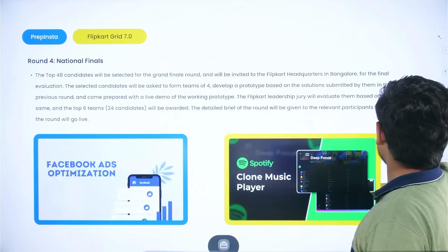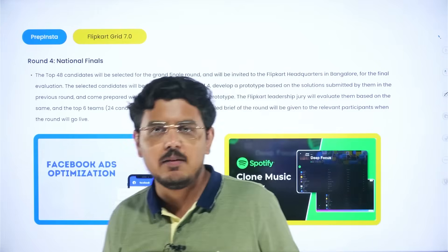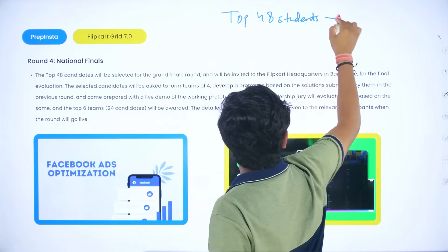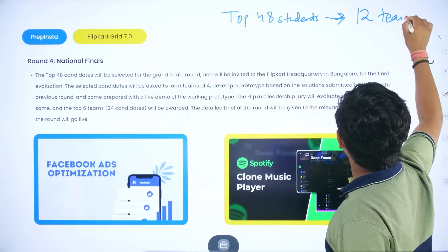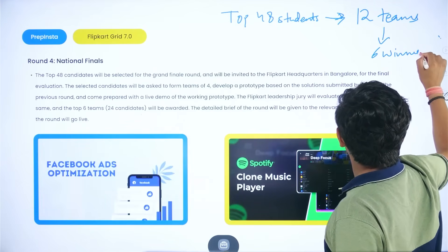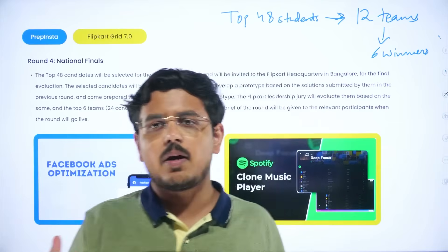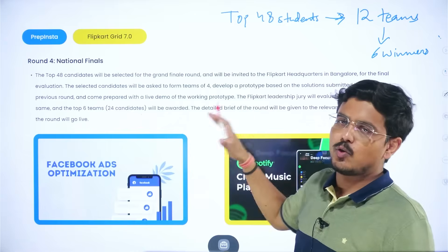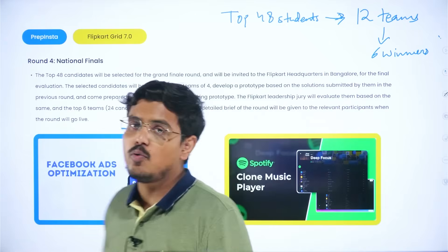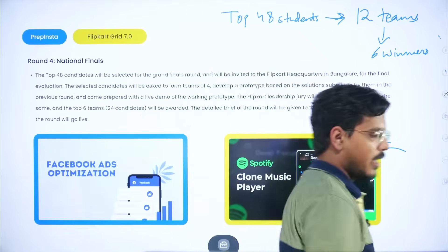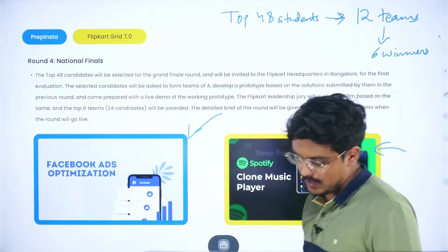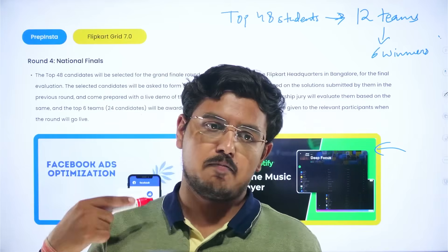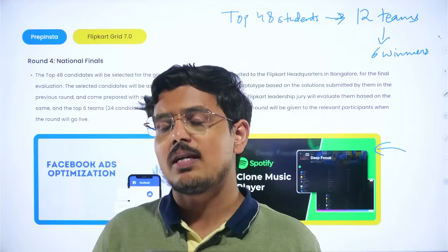Once round 3 is done, the top 48 students are found and divided into 12 teams. Out of these 12 teams, 6 winners are announced — 2 share the first prize, 2 share the second prize, and 2 teams share the third prize. A detailed brief will be given to you, and you'll have to show a final working prototype in a live demo. You need to build a lot of projects for this — things like a clone music player or Facebook ads optimization. Being in sync with upcoming technologies is what will help you here.